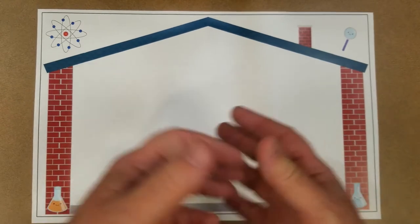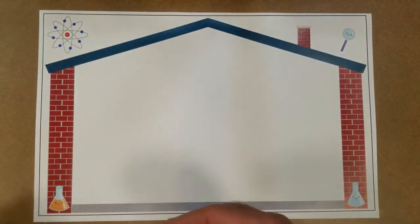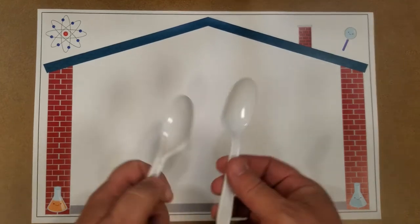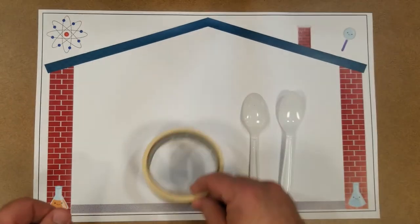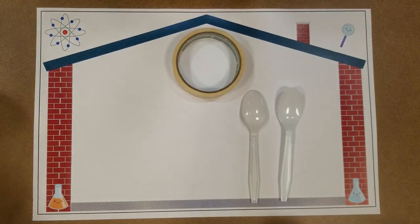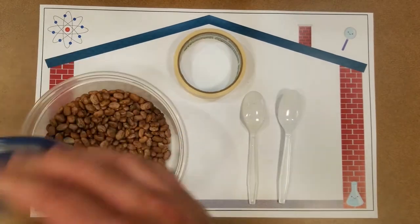So what I have for my materials is I have a couple of plastic spoons, I have some masking tape, I have some beans, these are just some nice dry brown beans.